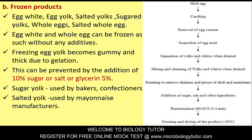Freezing egg yolk: Egg yolk becomes gummy and thick due to gelation. This can be prevented by the addition of 10% sugar or salt, or 5% glycerin. Sugared yolk is used by bakers and confectioners; salted yolk is used by mayonnaise manufacturers.